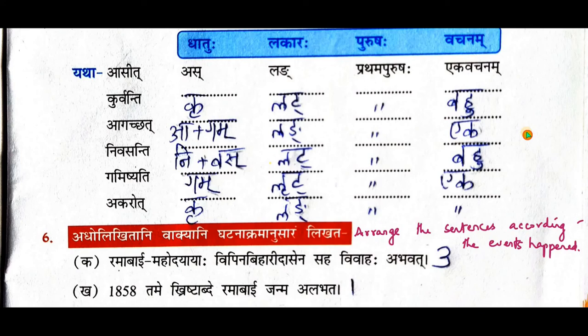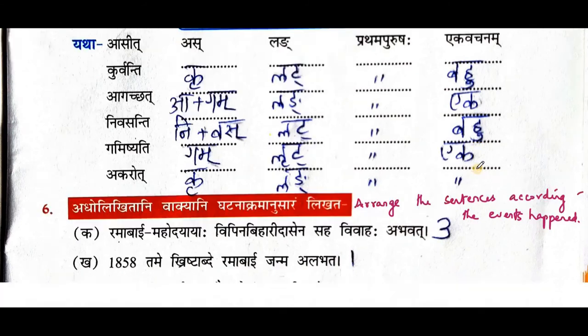Second word: agachat — here 'a' is upasarga and gam is the dhatu, so a plus gam; lakara is lang lakara (past tense), prathama purusha, ekavachana. Third word: nivasanthi — ni is upasarga, vasa is dhatu; lakara is lat lakara (present tense), prathama purusha, bahuvachana. Fourth word: gamishyati — dhatu is gam, lakara is lrit lakara (future tense), prathama purusha, ekavachana. Fifth word: akaroth — dhatu is kri, lang lakara (past tense), prathama purusha, ekavachana.